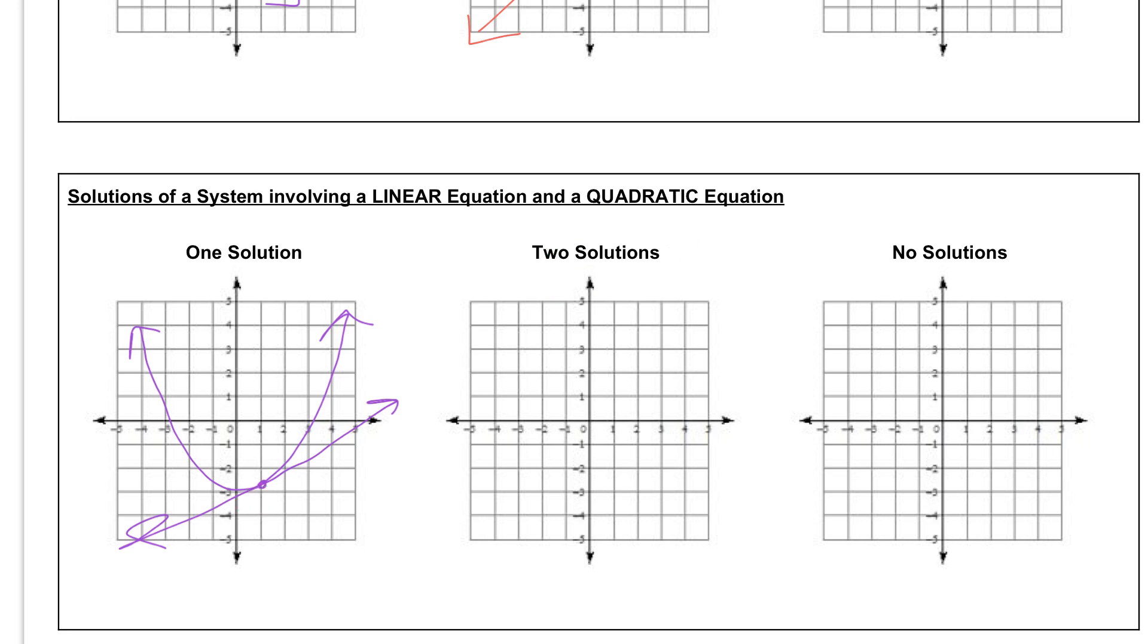We could have two solutions. So if we had our quadratic equation, our parabola, and our line went through here, now we're intersecting at two spots. One here and one here, which gives us two different solutions.